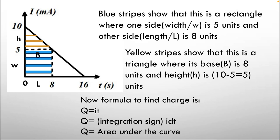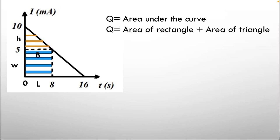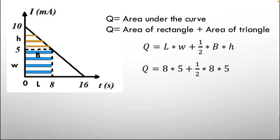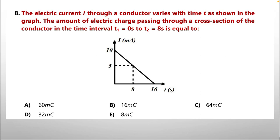The area under the curve is directly proportional to the integration of current over time. So Q = area of rectangle + area of triangle. Using the formulas — area of rectangle = length × width, and area of triangle = ½ × base × height — and substituting the values, the answer we get is 60 coulombs. Therefore option A is correct: 60 millicoulombs.